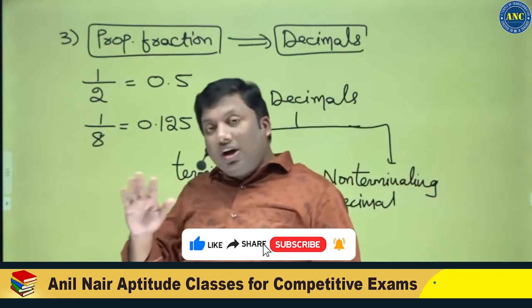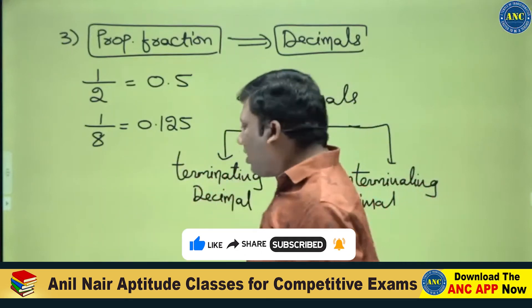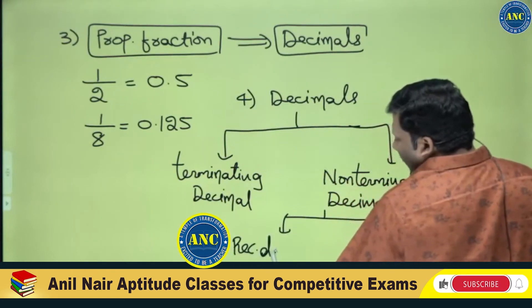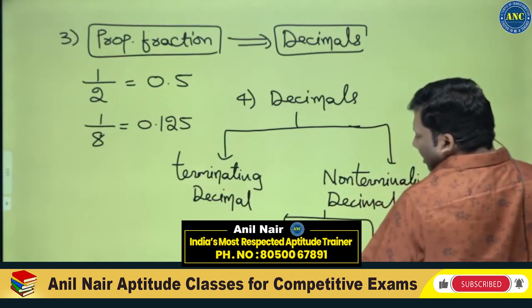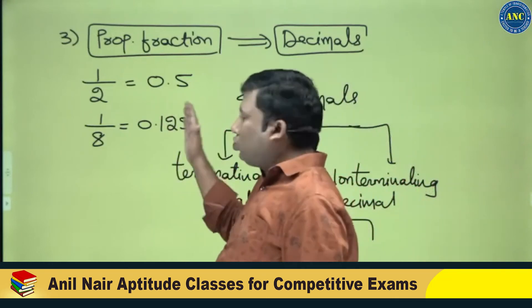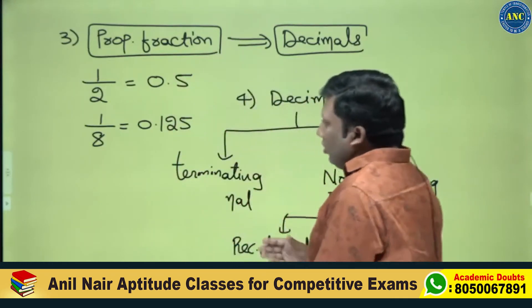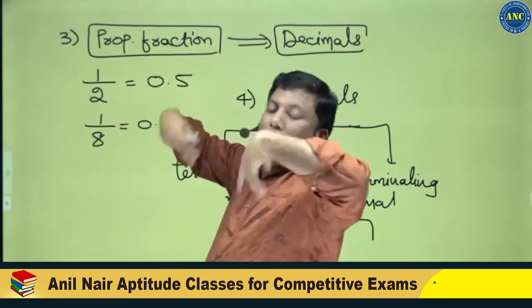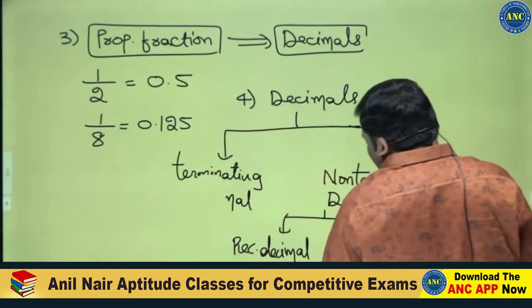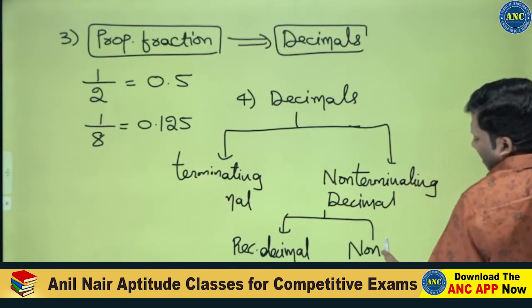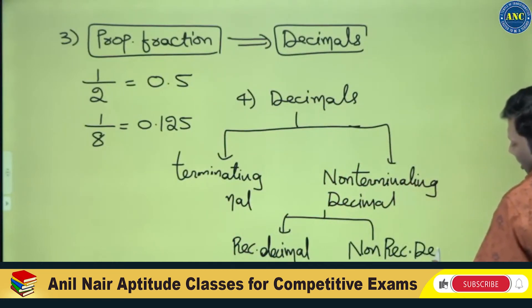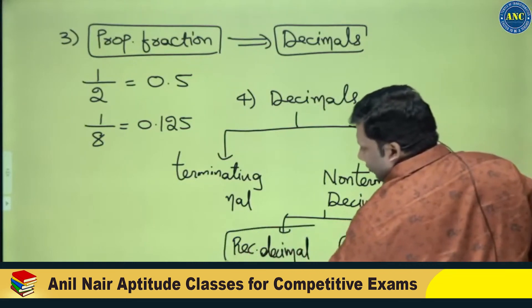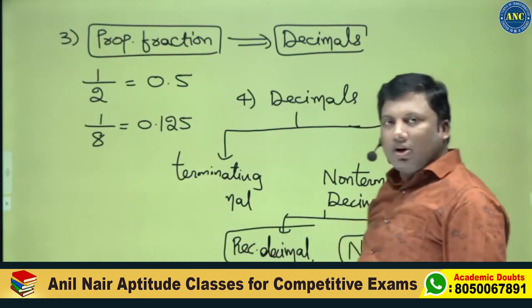Non-terminating means the digits do not end. If the same set of digits repeats — for example, 0.2222 or 0.343434, where 3 and 4 keep coming back — that is called a recurring decimal. If the digits are non-terminating but the same set of digits is not getting repeated, then it is called a non-recurring decimal.